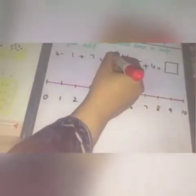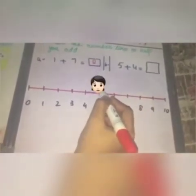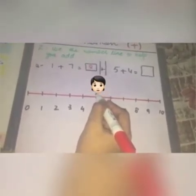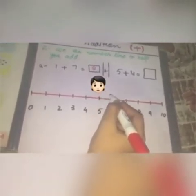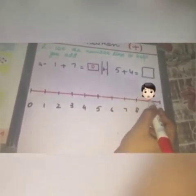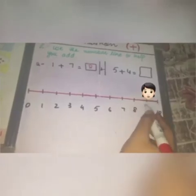Now where is Sarah standing? Sarah is standing on the eighth step, so the answer is eight. One more example: Ali is standing on the fifth step. His teacher asked him to take four more steps — one, two, three, four. Now Ali is standing on the ninth step, so the answer is nine.